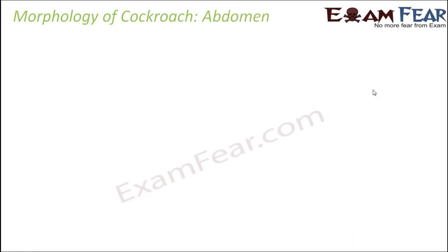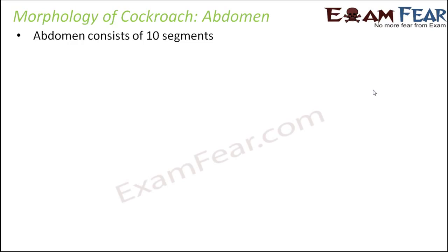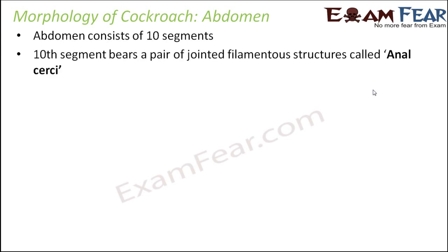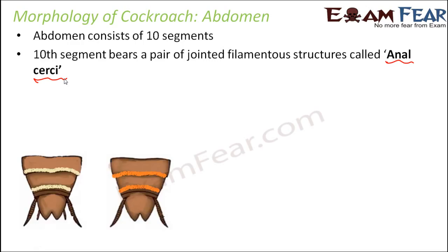Now the third region of the cockroach is the abdomen. The abdomen is one of the longest segments and it consists of 10 well-segmented parts. There are a few differences between male and female cockroach abdomen. The 10th segment, the last segment, bears a pair of jointed filamentous structures called anal cerci. The lower-most part of the abdomen also consists of the genital organs.